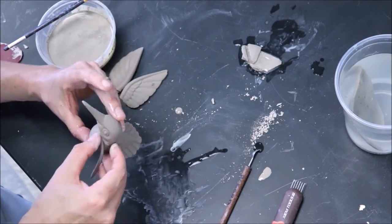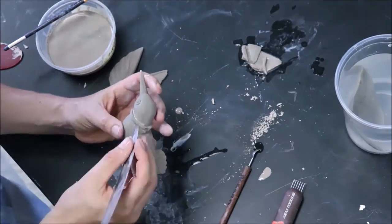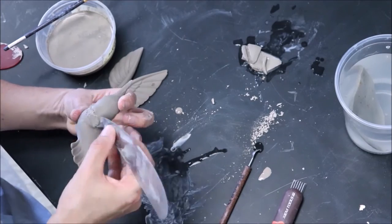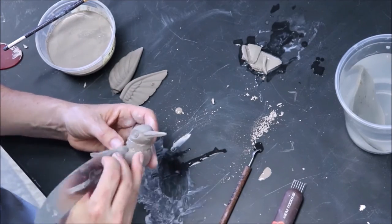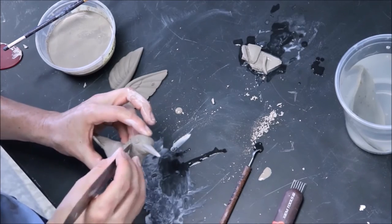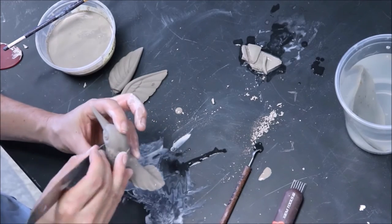Because the plaster draws the water out evenly and consistently, it creates a perfectly uniform clay wall with no deviation in thickness. In order for this to work, your mold needs to be dry. If your mold is wet, it does not make a very good sponge.